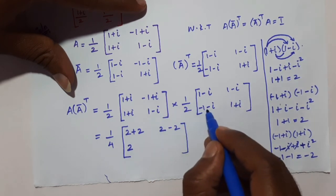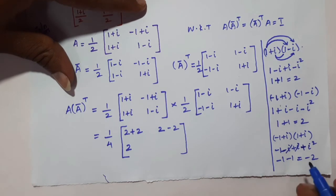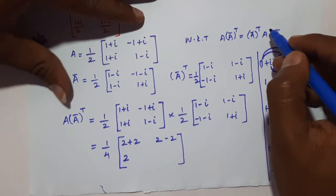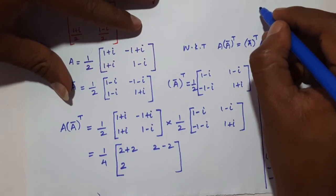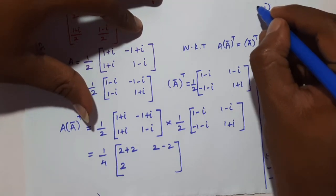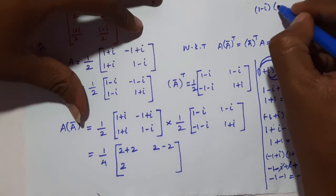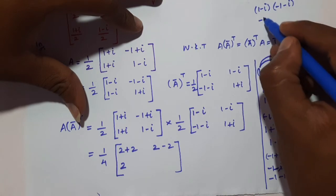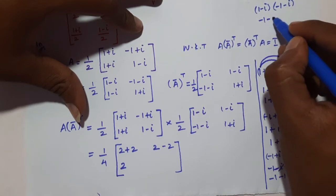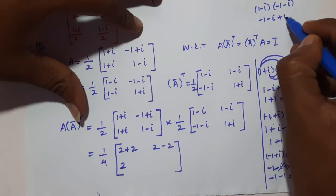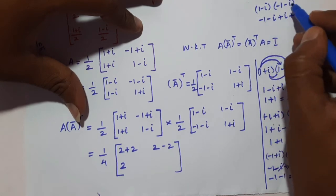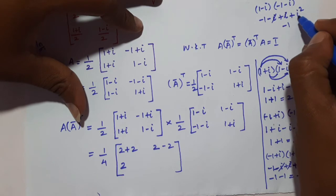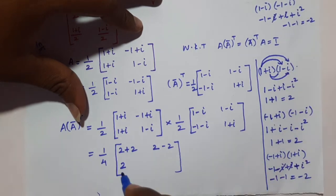Computing (1-i)(-1-i): 1·(-1) = -1, then 1·(-i) = -i, then (-i)·(-1) = i, then (-i)·(-i) = i². These two middle terms cancel. Then i² = -1, so minus i² = +1, giving -1 + 1 = 0. Wait — result is -2 here. So this element equals -2.